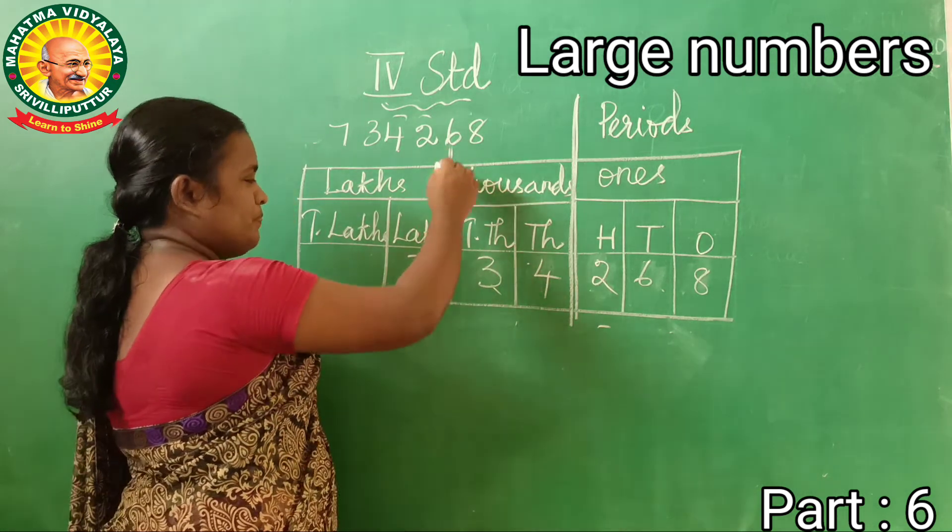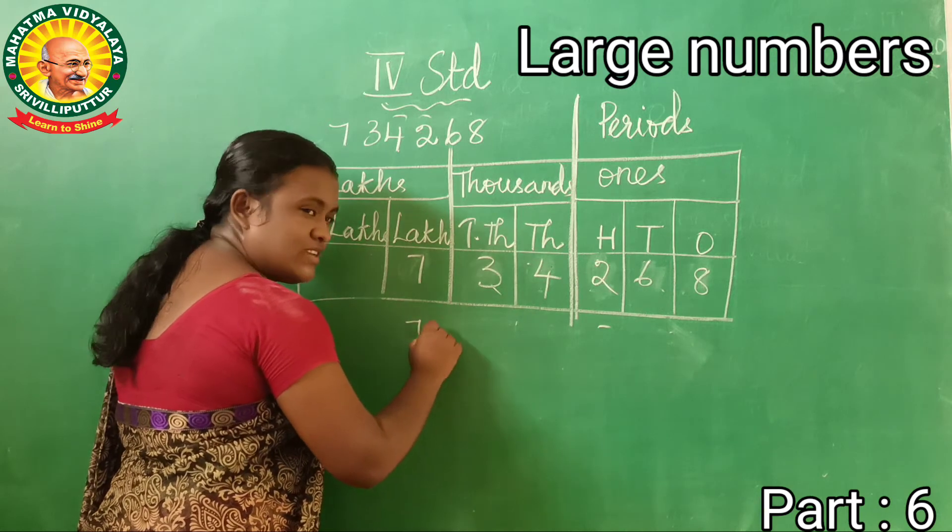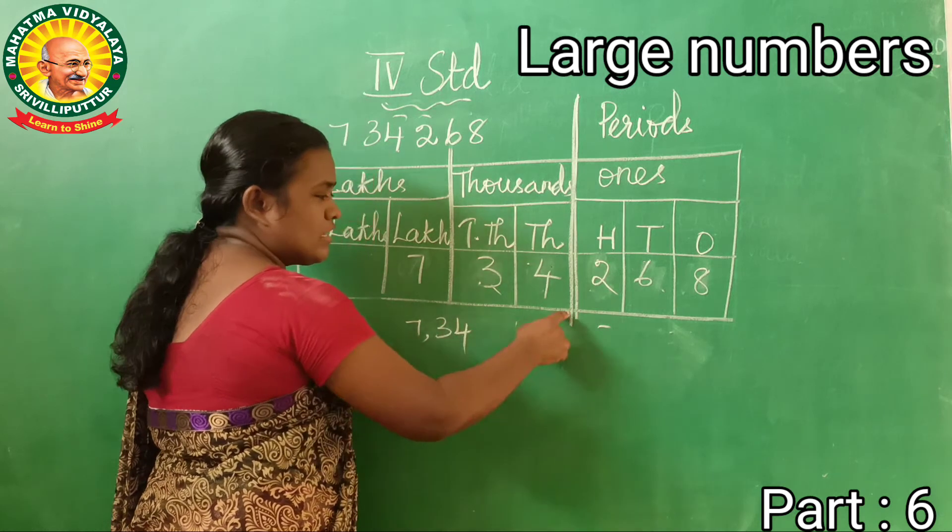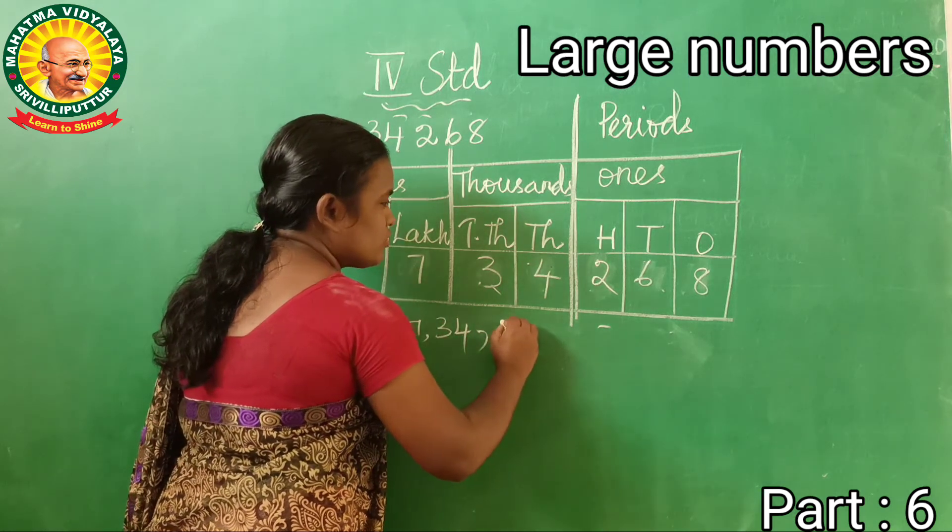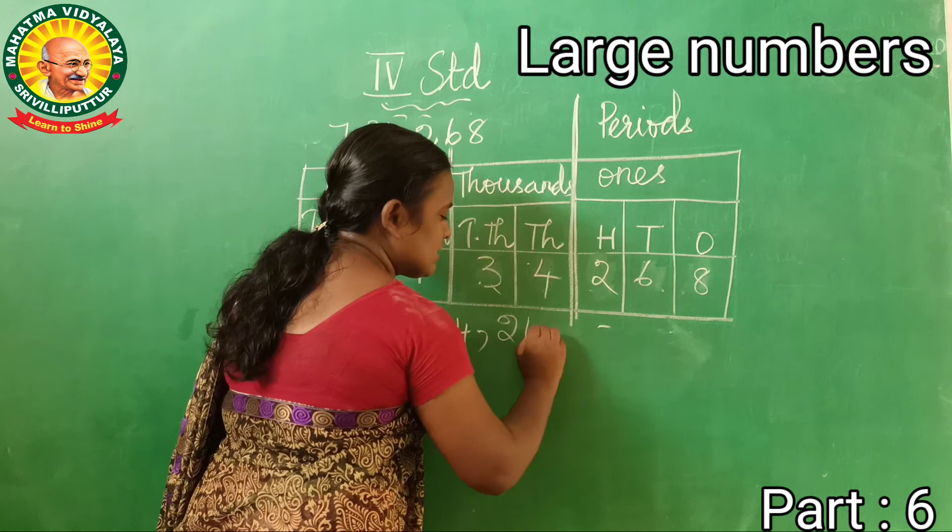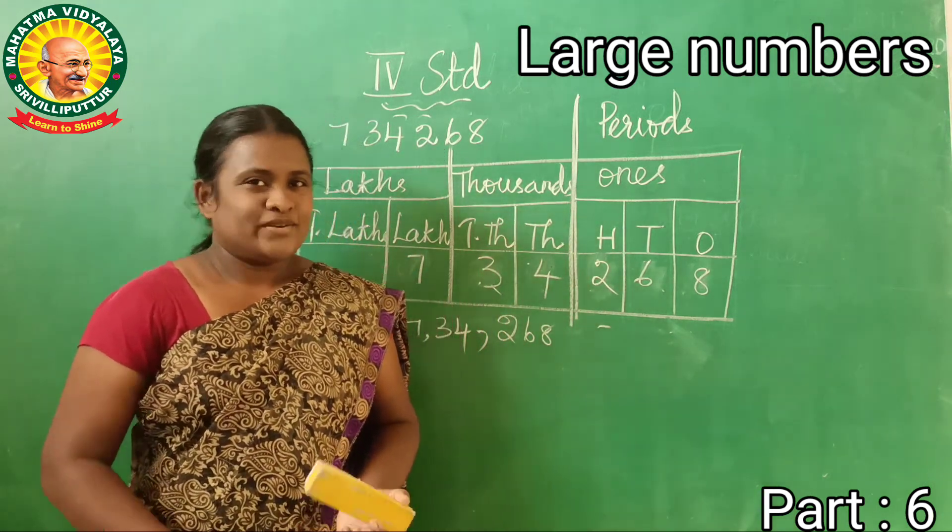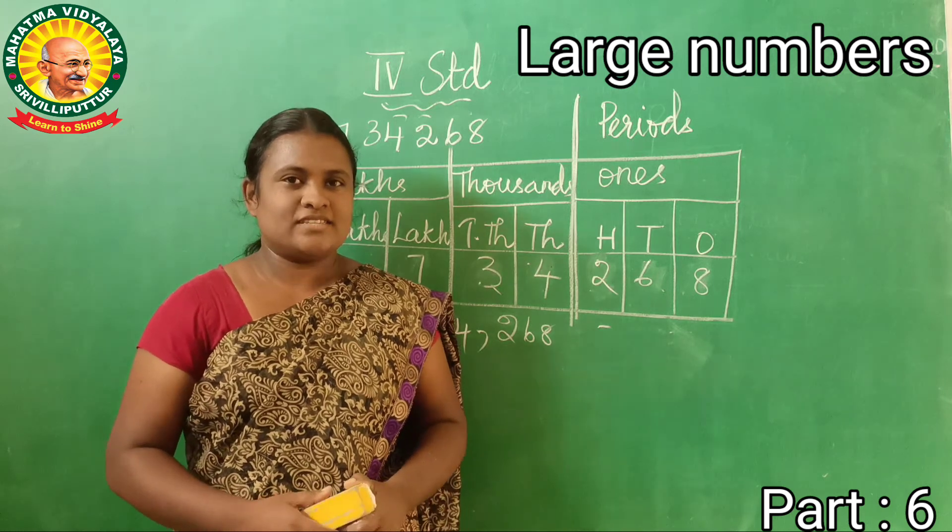How to insert the comma? Very good. Seven, that is comma. And the next one is thirty-four thousand, comma. And the next one is two hundred and sixty-eight. It is easy. Do you understand this?